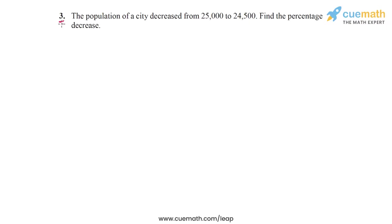In question 3, the problem statement says that the population of a city decreased from 25,000 to 24,500. Find the percentage decrease. From the original value of 25,000, the population decreased to 24,500 and we have to find the percentage decrease. This is actually quite simple.